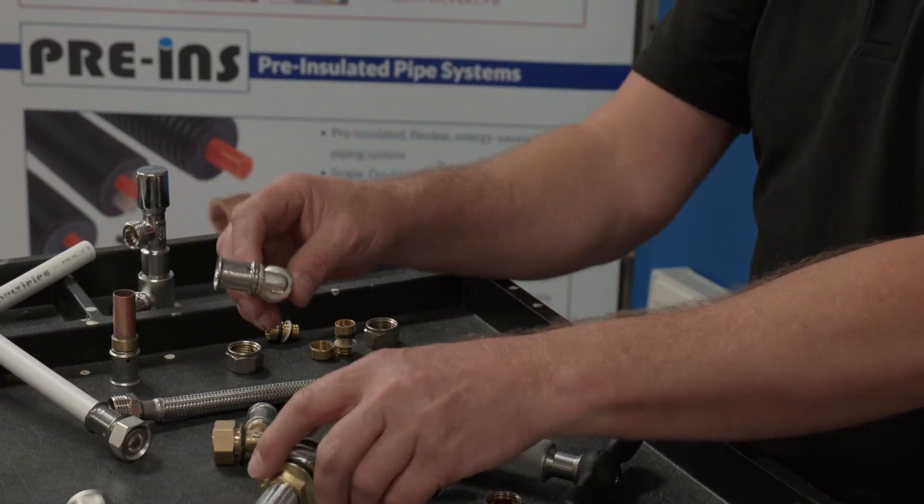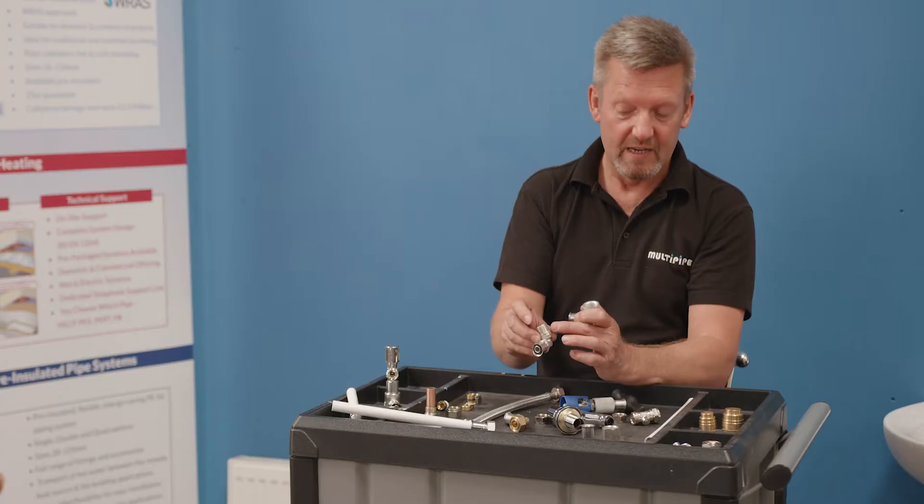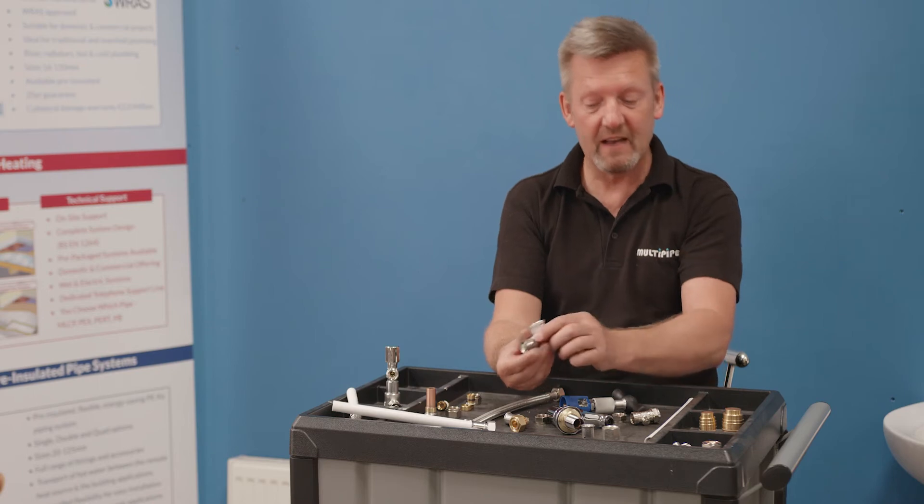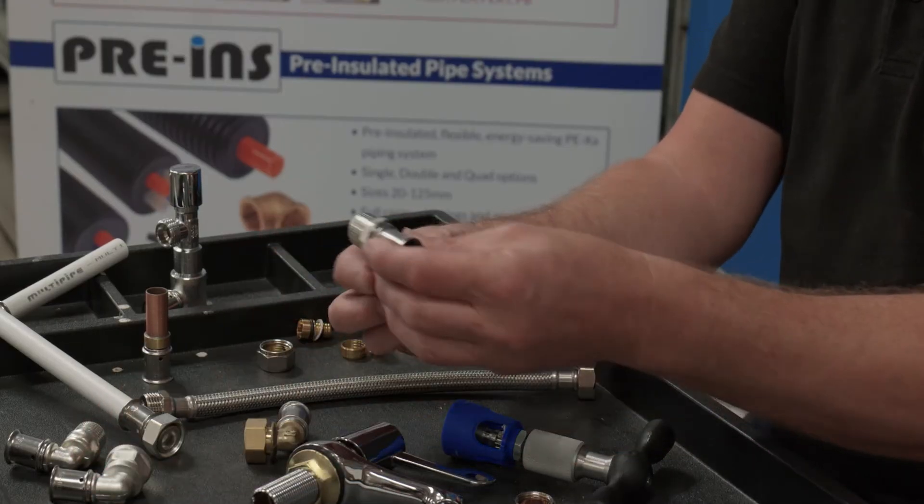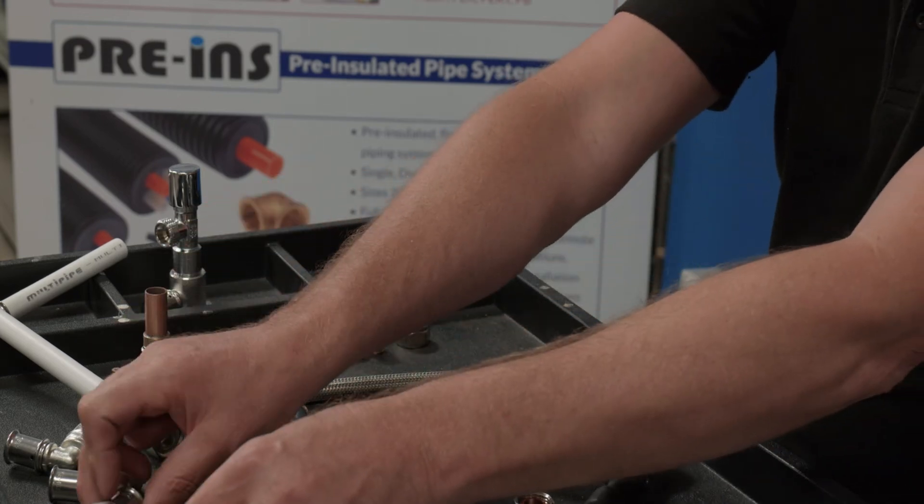So we have bent male and bent female versions. Again, 16mm MLC to half inch BSP or half inch BSP female in the bent version, in the straight version, exactly the same. So these are fixed rather than swivel joints.